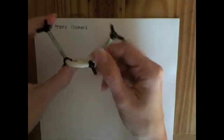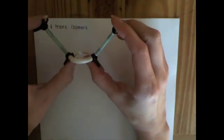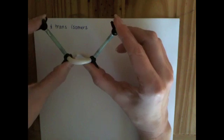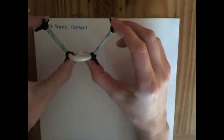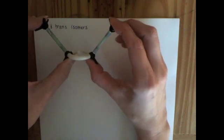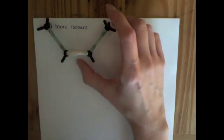which is unable to rotate due to the pi bonding, when you have this restricted rotation around one of the carbon-carbon bonds, you have the possibility for the existence of cis and trans isomers of a particular molecular formula. For example,